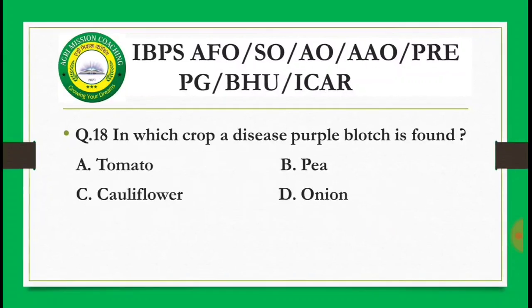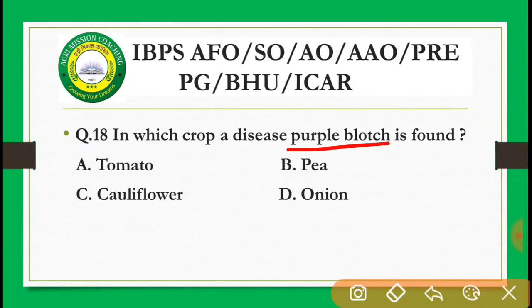Next question: In which crop is the disease purple blotch found? Options are: tomato, pea, cauliflower, onion. The correct answer is onion — purple blotch, caused by Alternaria porri, occurs in onion.